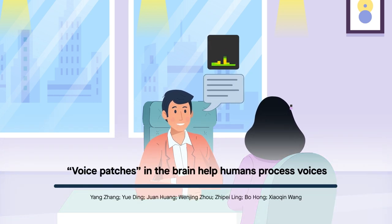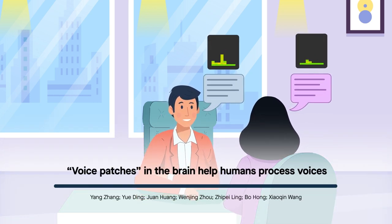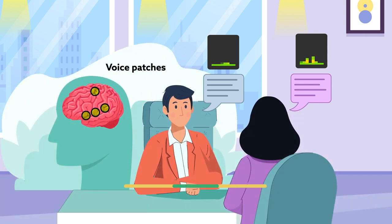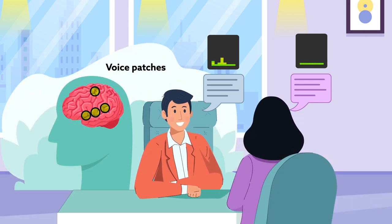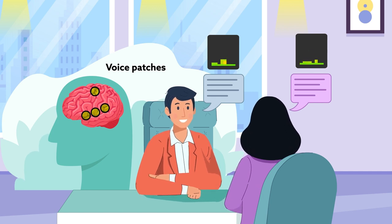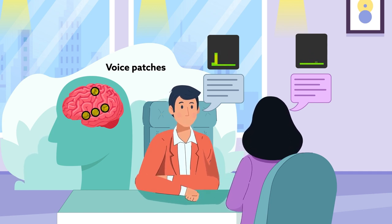How can we tell what's in a voice? A new study has confirmed that specific brain regions called voice patches help us process the information contained in voices. The findings are published in the Proceedings of the National Academy of Sciences.